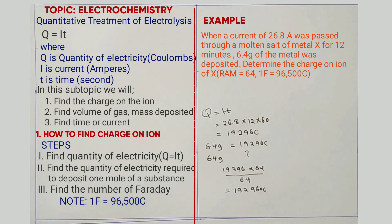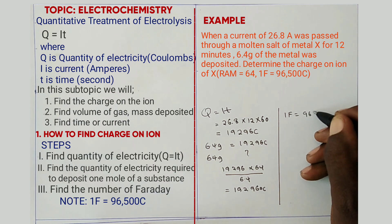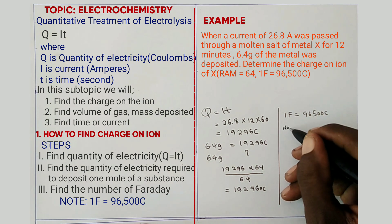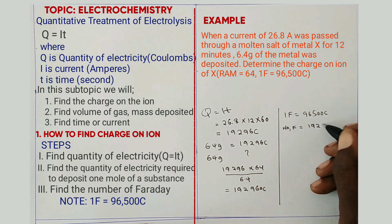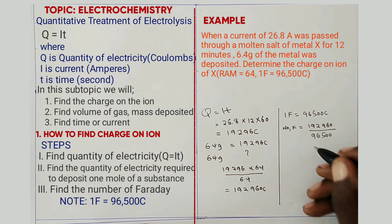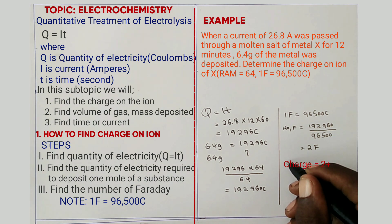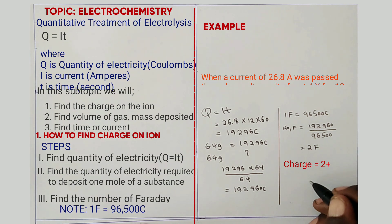The answer you get there is 19,296 C. Now step three: you find the number of Faradays. One Faraday is always equal to 96,500 C. So in this case, the number of Faradays equals 19,296 C divided by 96,500, giving 2 F. Therefore the charge is equal to 2+, so the formula of the ion will be X²⁺.